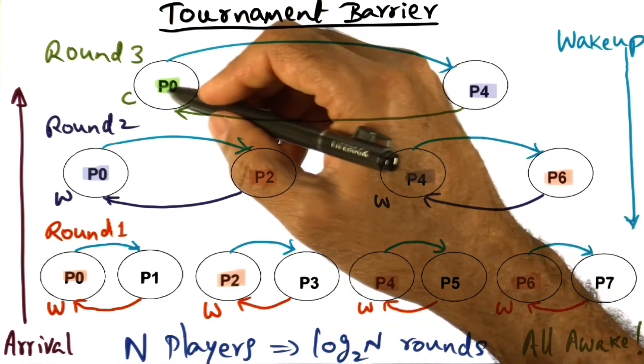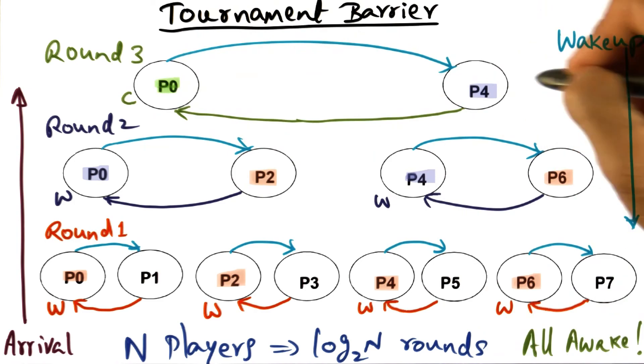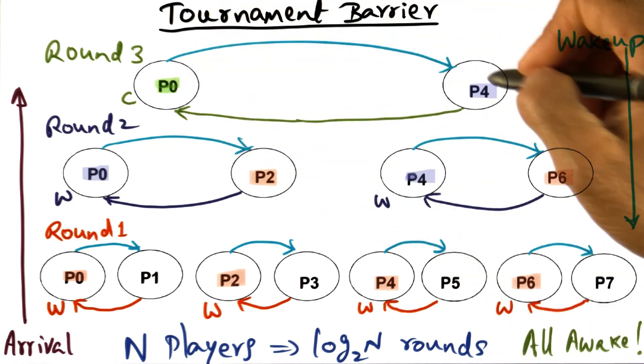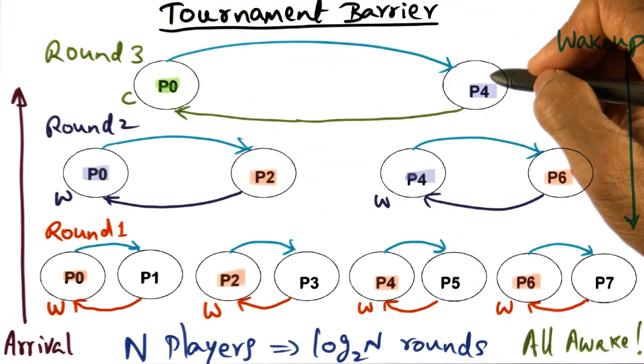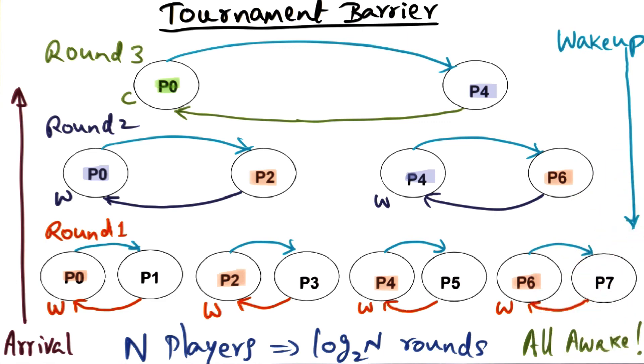The losers are all waiting on a statically determined spin location in the respective processors. And the winner comes over at every level, at every round of the tournament, the winner comes over and tells the loser that it's time to wake up. So that's how this whole thing works.